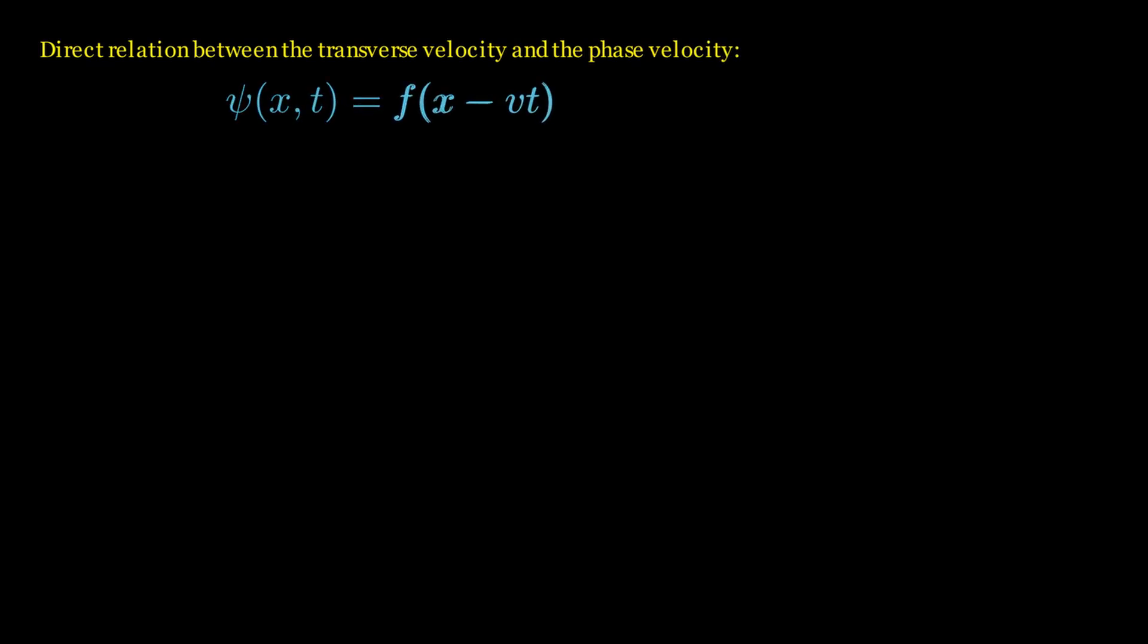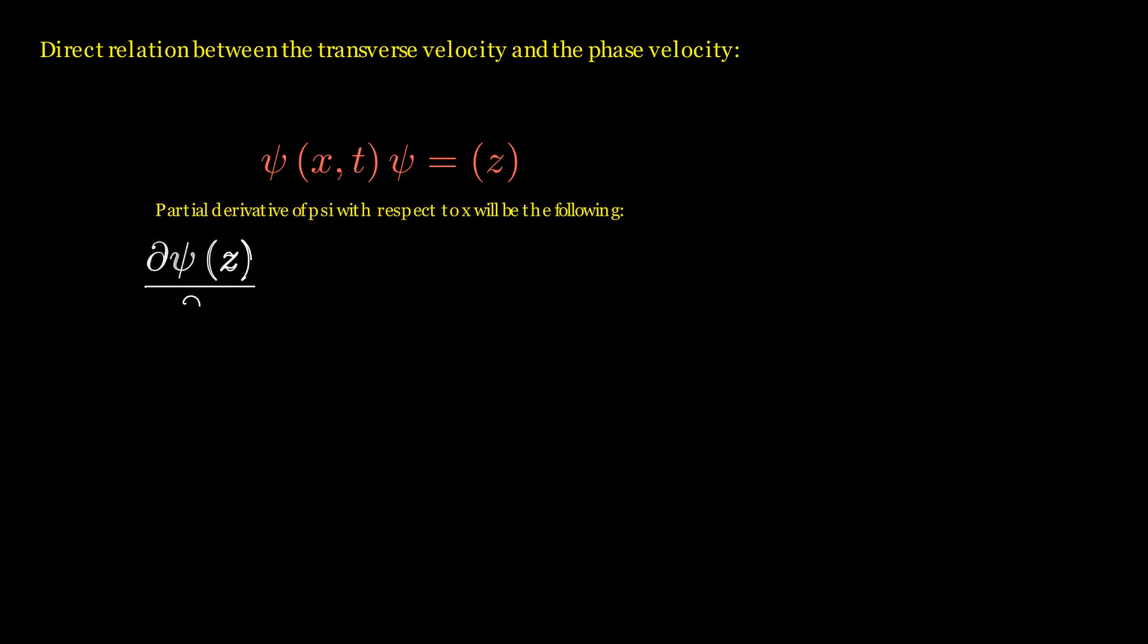Consider a solution to the wave equation of the form psi(x,t) equals f(x minus vt). If now I take the argument x minus vt equals to some constant say z, then the partial derivative of psi with respect to x will be the following.